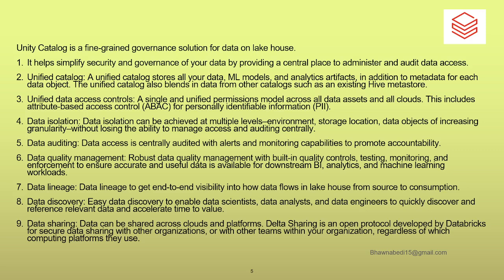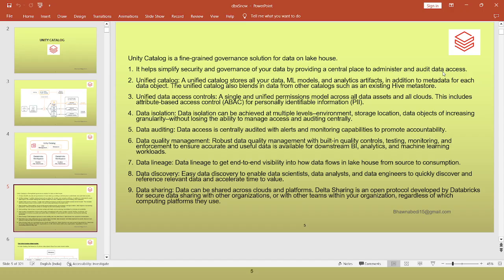You can also see data lineage in Unity Catalog. For example, if you have a specific column derived from five other tables using some transformations, that lineage can be visualized — you get end-to-end visibility on how your data flows from the lake house to consumption. Similarly, you also have data sharing: if you have a set of tables you want to share across different platforms or different clouds, you can do that using the Delta Sharing option in Databricks.